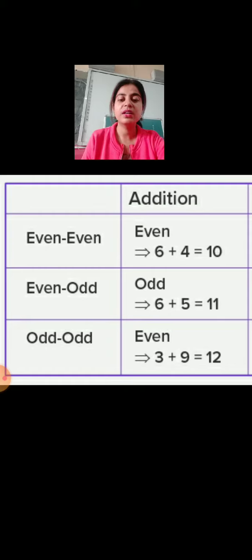Next, that is the third case which we have is when we add two odd numbers. When we add two odd numbers, that is 3 and 9, the result, that is a sum is 12 which is an even number.